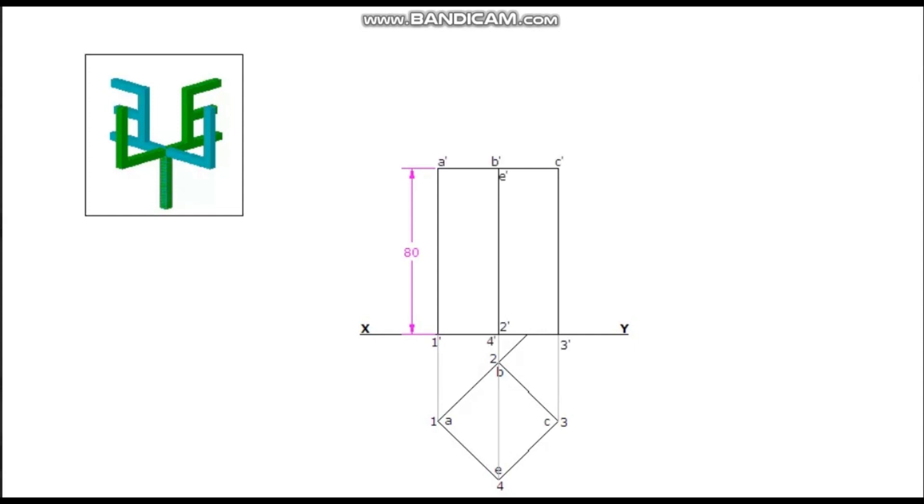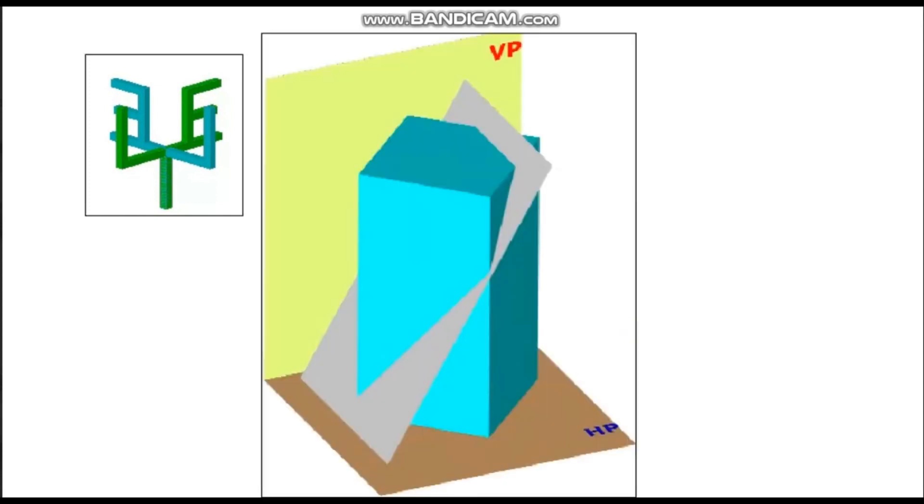Projection of the square prism, which is resting on its base and two vertical faces equally inclined to VP, are completed. The sectional plane or cutting plane is perpendicular to VP and inclined to HP.